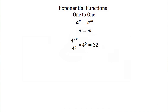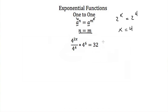Exponential functions are one-to-one functions, and because they're one-to-one, you can use the one-to-one property to solve them. Basically, if you have the same base on each side and an exponent on each, the exponents must be equal if the two terms are equal. So if 2 to the x equals 2 to the 4th, then x must equal 4.